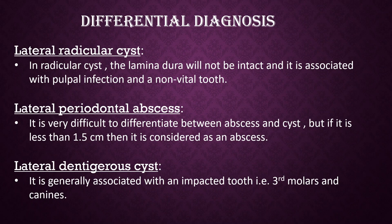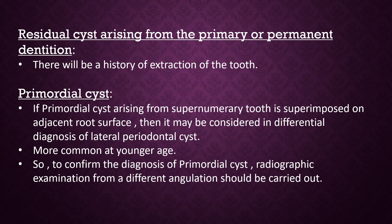Differential Diagnosis: In radicular cysts, the lamina dura will not be intact and it is associated with pulpal infection and a non-vital tooth. Lateral periodontal abscess: It is very difficult to differentiate between an abscess and a cyst, but if it is less than 1.5 cm it is considered an abscess. Lateral dentigerous cyst is generally associated with an impacted tooth such as third molars and canines. Residual cyst arises from primary or permanent dentition and there will be a history of extraction. Primordial cyst: If a primordial cyst arises from a supernumerary tooth, it may be superimposed on the adjacent root surface and considered in the differential diagnosis.